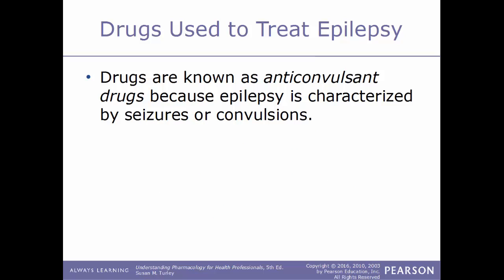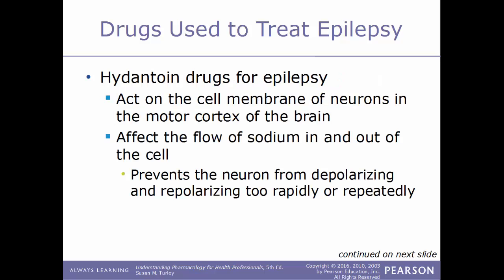The drugs given to treat epilepsy are known as anticonvulsant drugs because epilepsy is characterized by seizures or convulsions. There are several different categories. The first group are the hydantoins, which act on the cell membrane of the neuron within the motor cortex of the brain. These affect the flow of sodium ions in and out of the cell, preventing the neuron from depolarizing and repolarizing too rapidly or repeatedly.